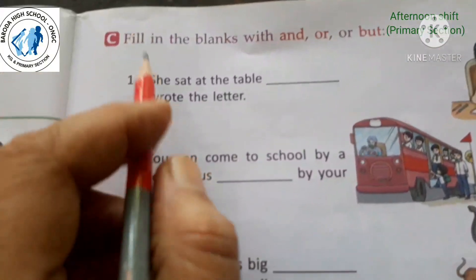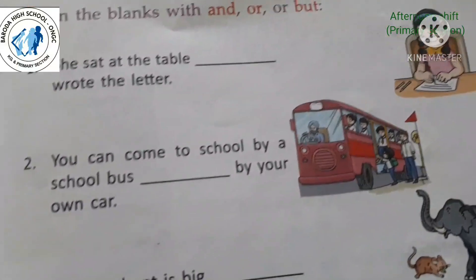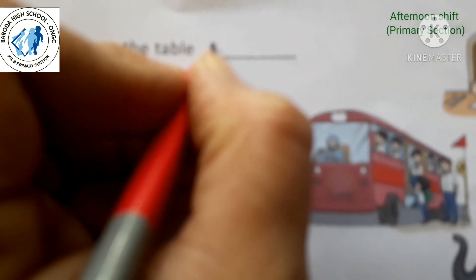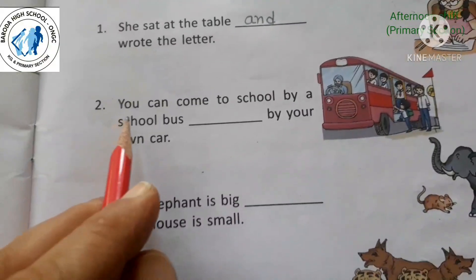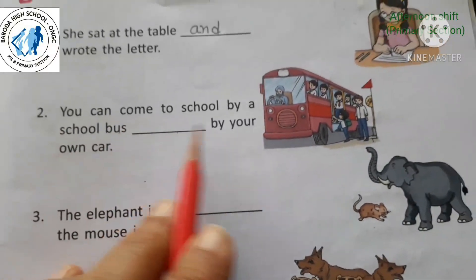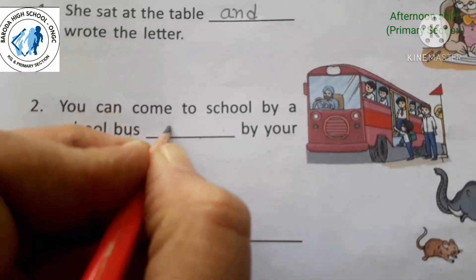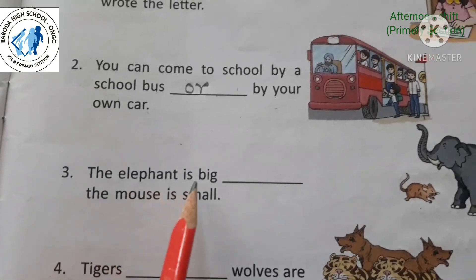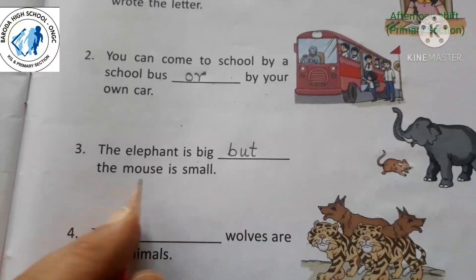Now second exercise: fill in the blanks with 'and', 'or', or 'but'. First: 'She sat at the table and wrote the letter.' Second: 'You can come to school by a school bus or by your own car' — options given. Third: 'The elephant is big but the mouse is small' — showing contrast.